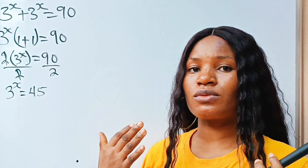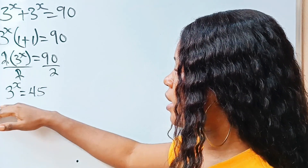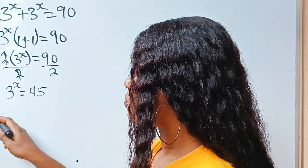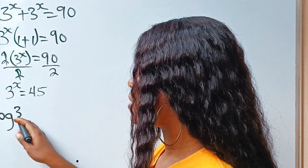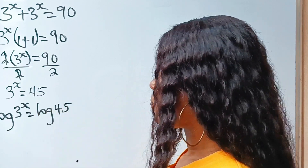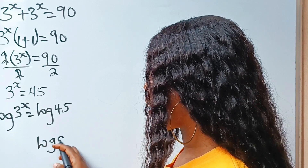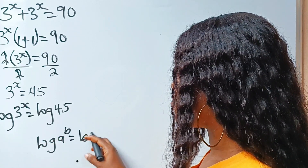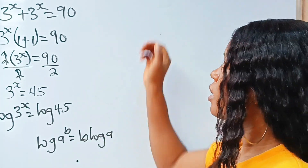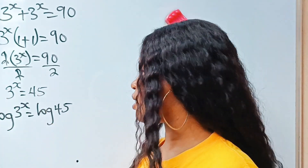At this point, we just have to introduce log. So let's take the logarithm of both sides of this equation. We have log 3 to the power of x is equal to log 45. Now, when you have log a to the power of b, it's the same thing as b multiplied by log a. So using the power rule, we are going to bring our x down.